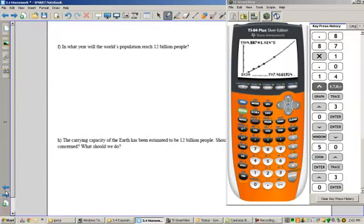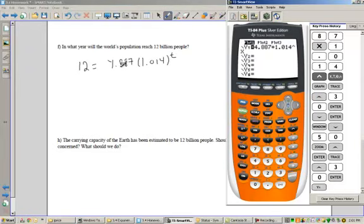On part F, we plugged in for the input, right, on part E. Now we're going to plug in for the output. And so here what we have is 12 equals, and then our formula, 4.887 times 1.014 to the T. And we want to find T this time. And so we'll use our calculator. We'll graph the right and then graph the left. So hit enter and put in a 12.